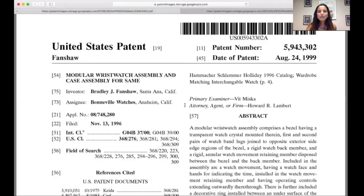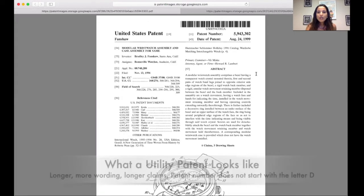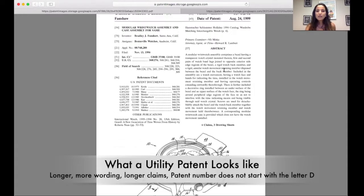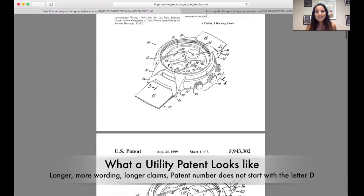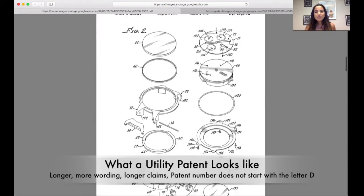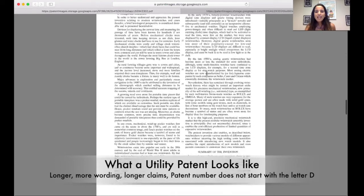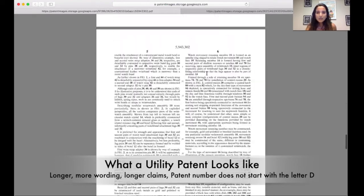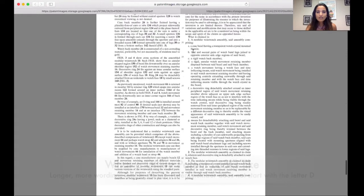Whereas for a utility patent, first of all, you'll notice that the patent number does not have that letter D in front of the patent number. In addition, you'll notice that there is a lot of wording on the patent. We'll find some drawings as well. And then at the end of the patent, you will see what we call the claims. And this is really the metes and bounds of your intellectual property for utility patents. And this is what you're trying to protect. Everything else is an explanation and a definition of what you want to protect here.